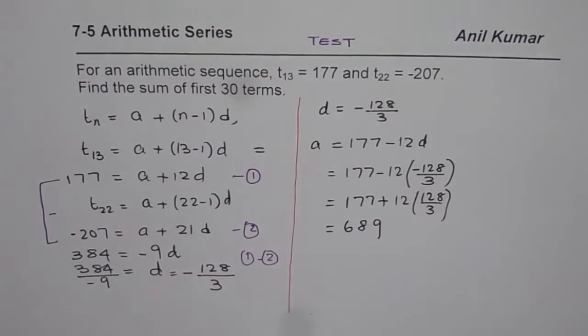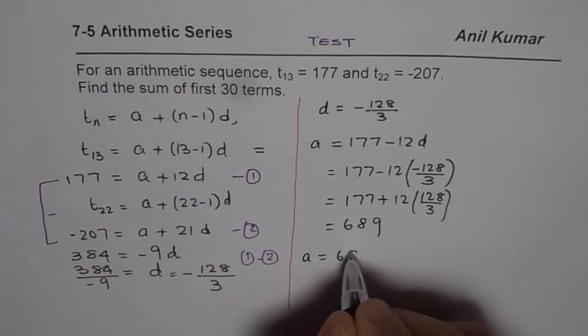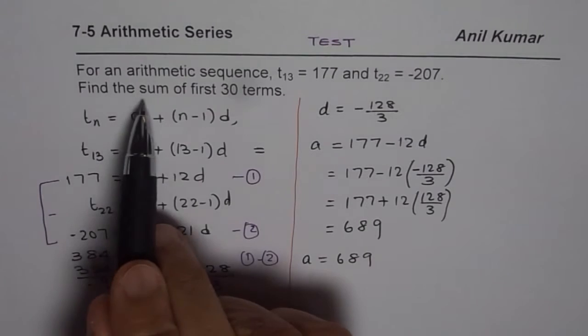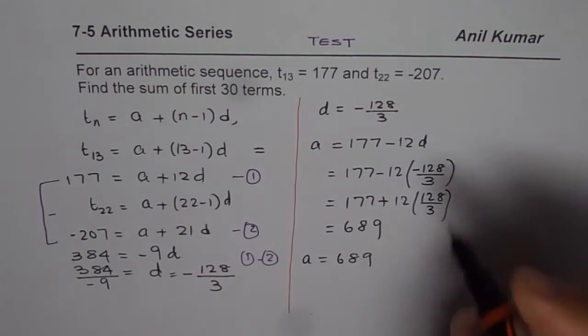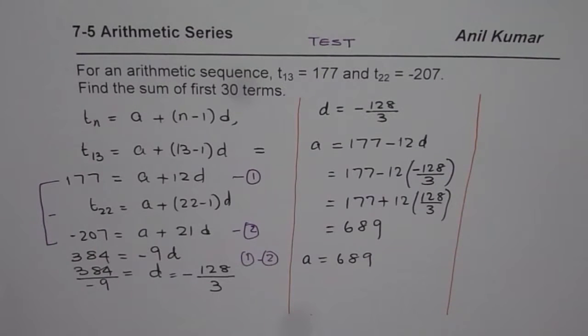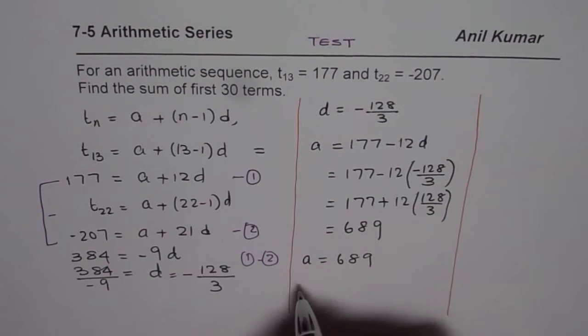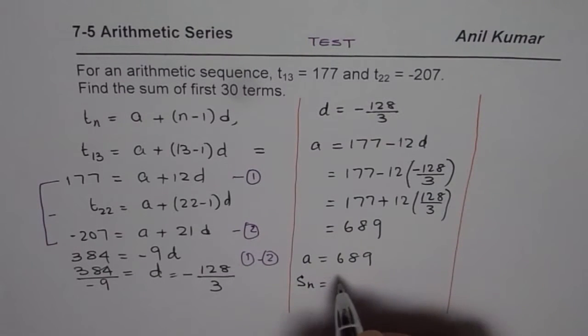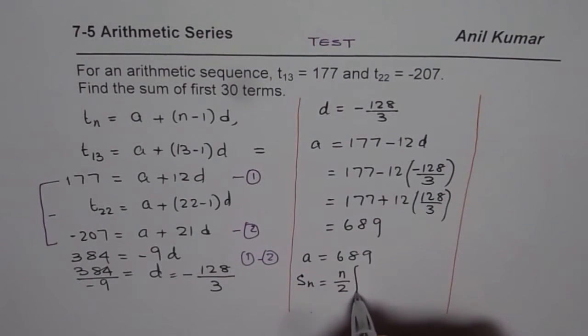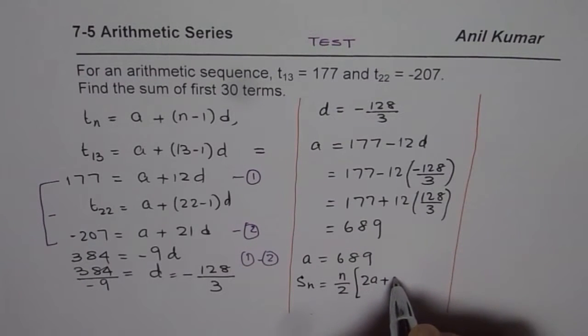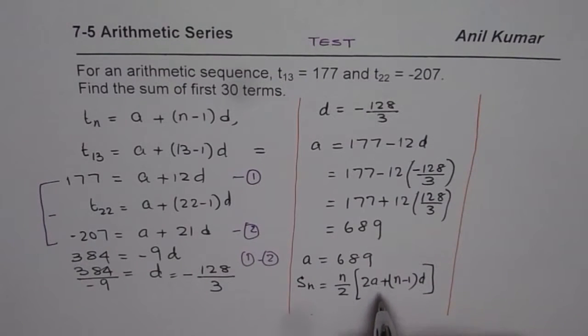What do we need? We need the sum of first 30 terms. Which formula to use? Since we don't know the 30th term, we'll use the formula which requires a and d. That formula is: Sₙ = (n/2)[2a + (n-1)d].